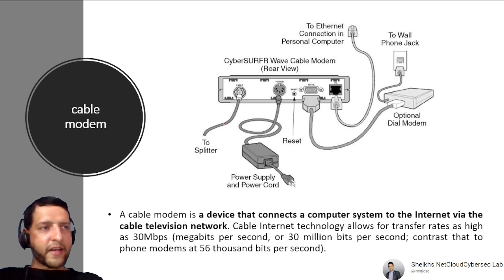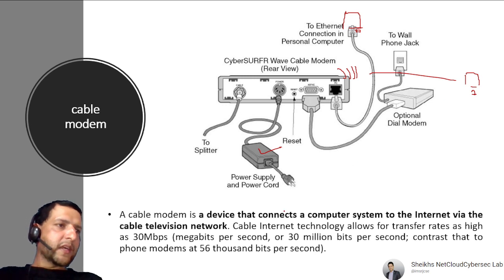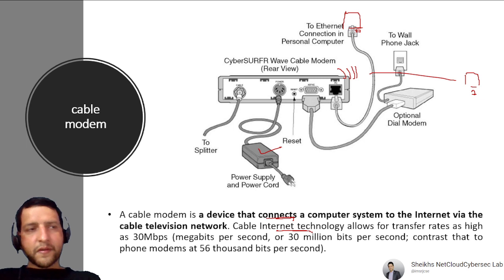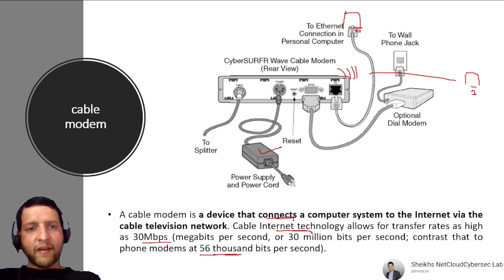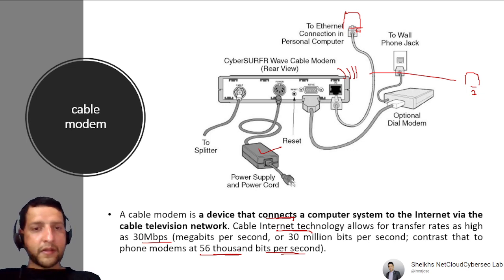A Cable Modem connects a computer system to the internet through a cable television network. It includes a splitter for telephone and internet signals, a power supply, and a wall jack connection from the ISP. It allows transfer rates as high as 30 Mbps. Earlier, dial-up connections offered only 56 Kbps; now speeds are measured in Mbps or even Gbps.